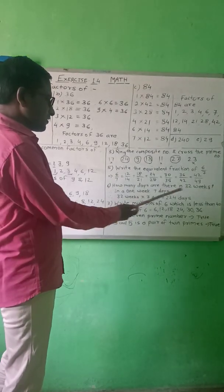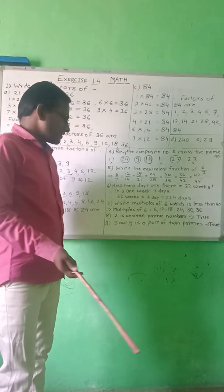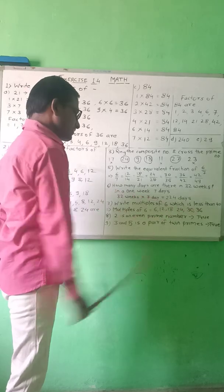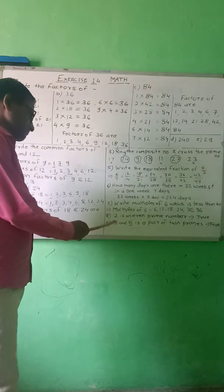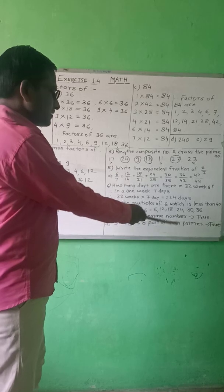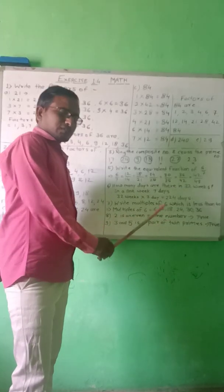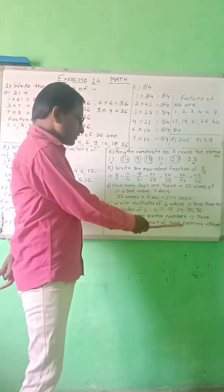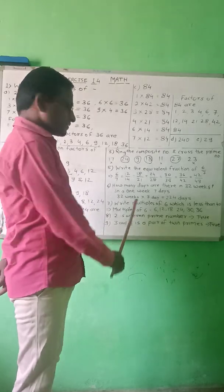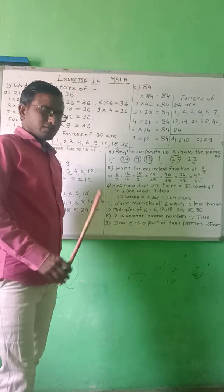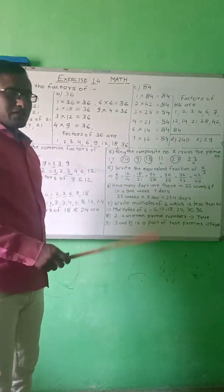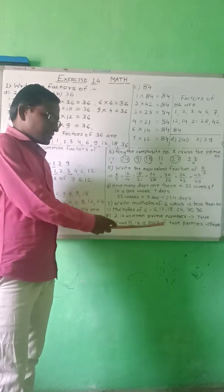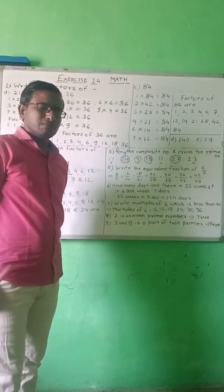Next question: write the multiples of 6. Multiples of 6 means repeated addition: 6, 12, 18, 24, 30, 36. Then, is 2 an even prime number? Yes, true — only 2 is an even prime number, so this statement is true. And 3 and 5 is a pair of twin primes — yes, this statement is also true. Twin prime means the difference between two consecutive prime numbers is 2.